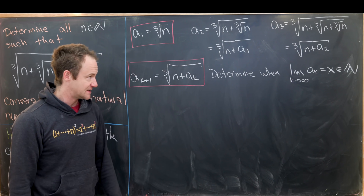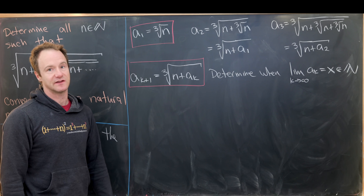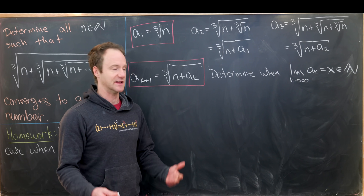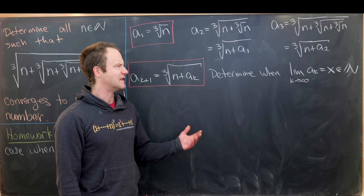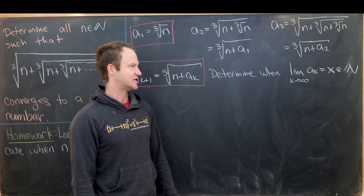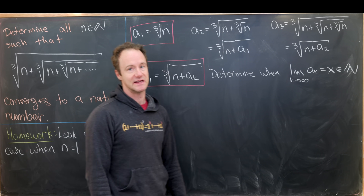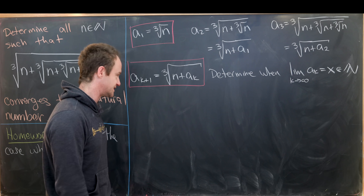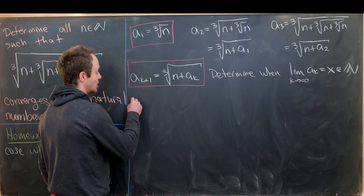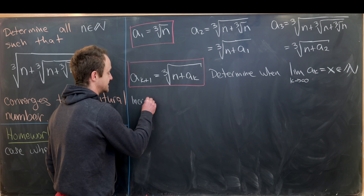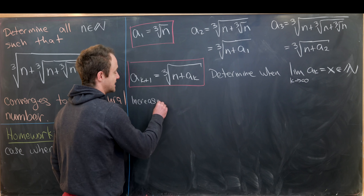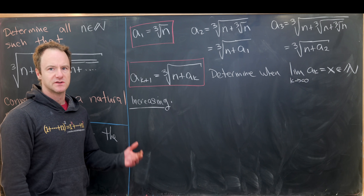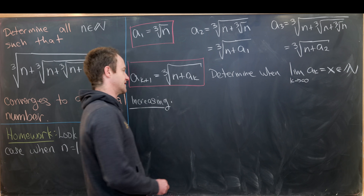Our goal is to determine when the limit as k goes to infinity of aₖ equals x, which is a natural number. Built into that is that the limit exists in the first place — we can't write the limit equals something without it existing. We'll show convergence using the monotone sequence theorem: we'll show the sequence is increasing and then show it's bounded above.